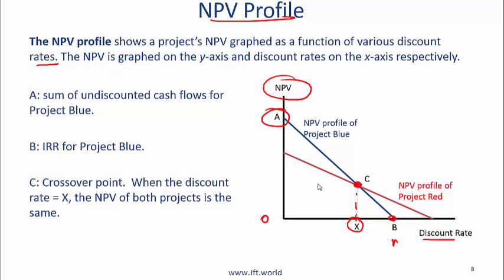If you are deciding between the two mutually exclusive projects, according to the IRR rule the red project is always better — it has a higher IRR. But NPV says to select the project with the higher NPV. If the discount rate is less than the crossover point X (say 10%), and the relevant discount rate is 6%, then the NPV rule says go for project blue. If the discount rate is 12%, the NPV rule says go for project red. So to the right of the crossover, the NPV rule and IRR rule say the same thing; to the left, there is a conflict.